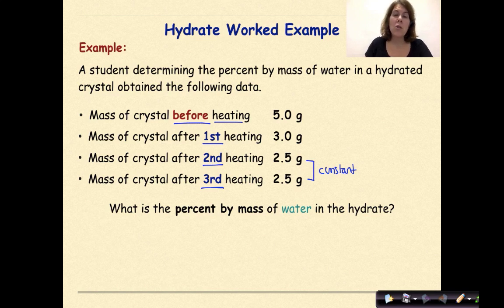So this initial mass right here is the mass of our hydrate. That is our ionic compound with the water molecules included before heating. Our anhydrate is where things become constant. So this is our anhydrate down here. So what is the percent by mass of water in the hydrate?